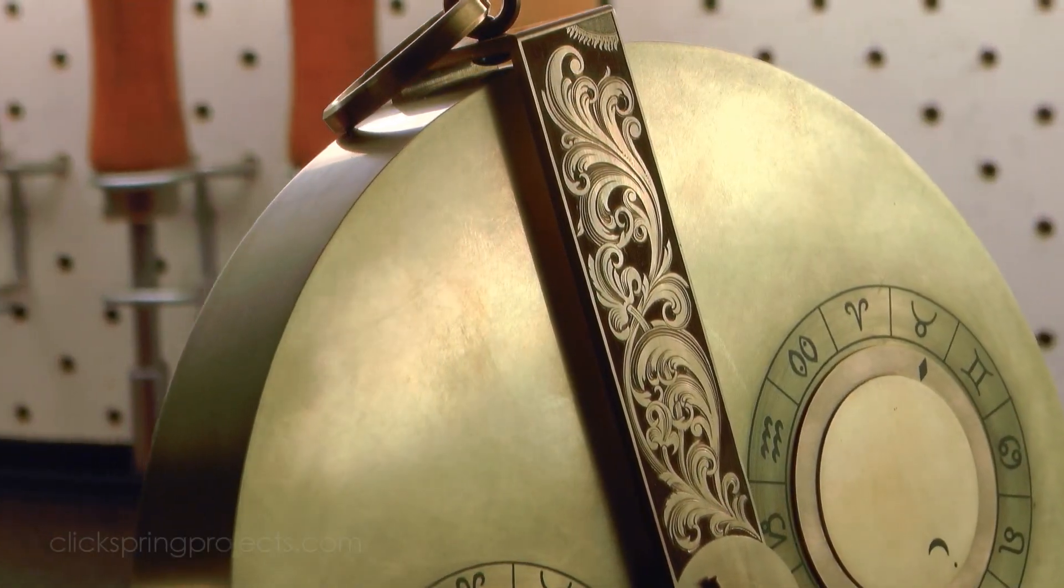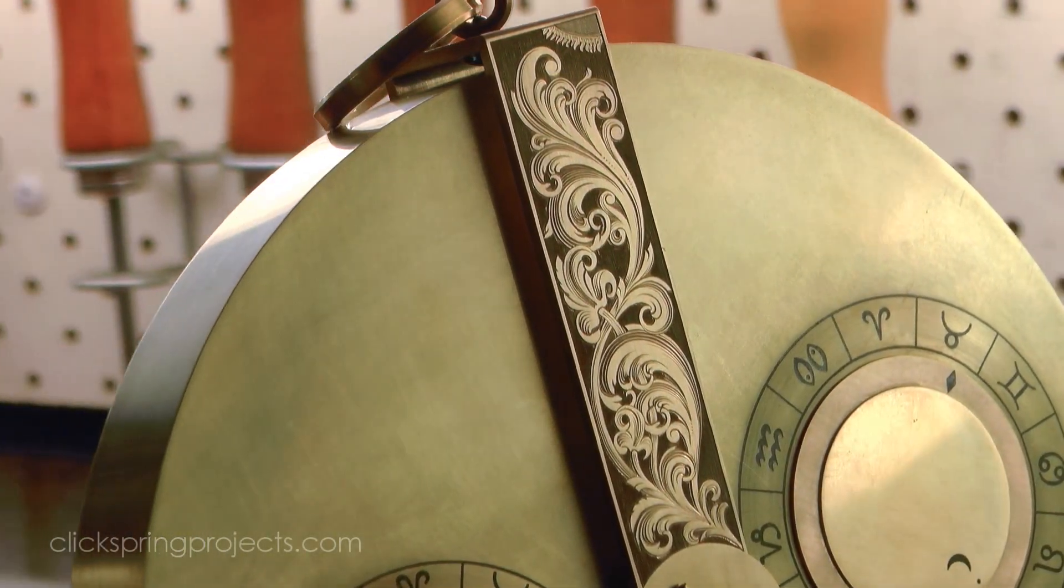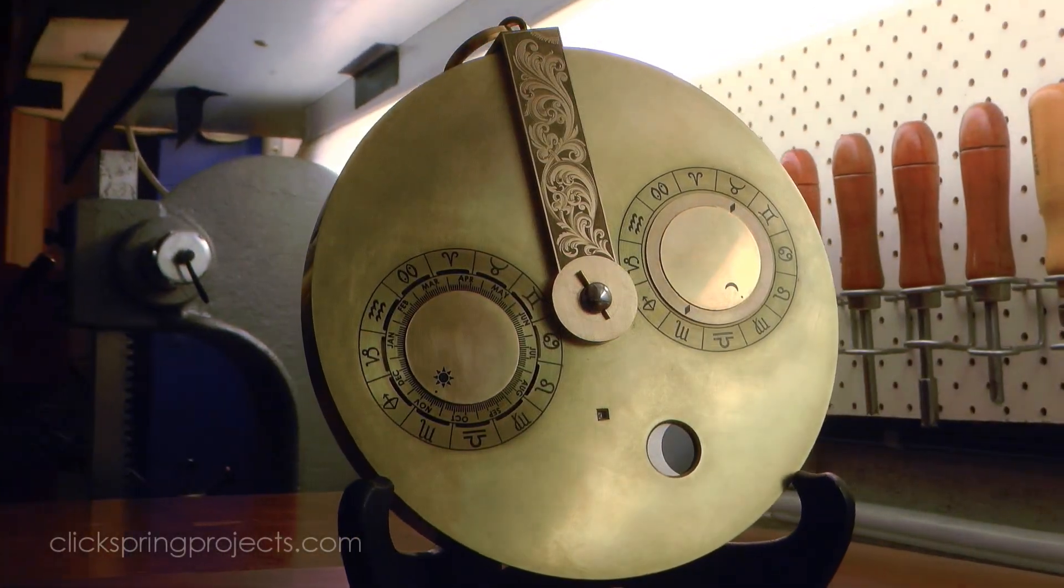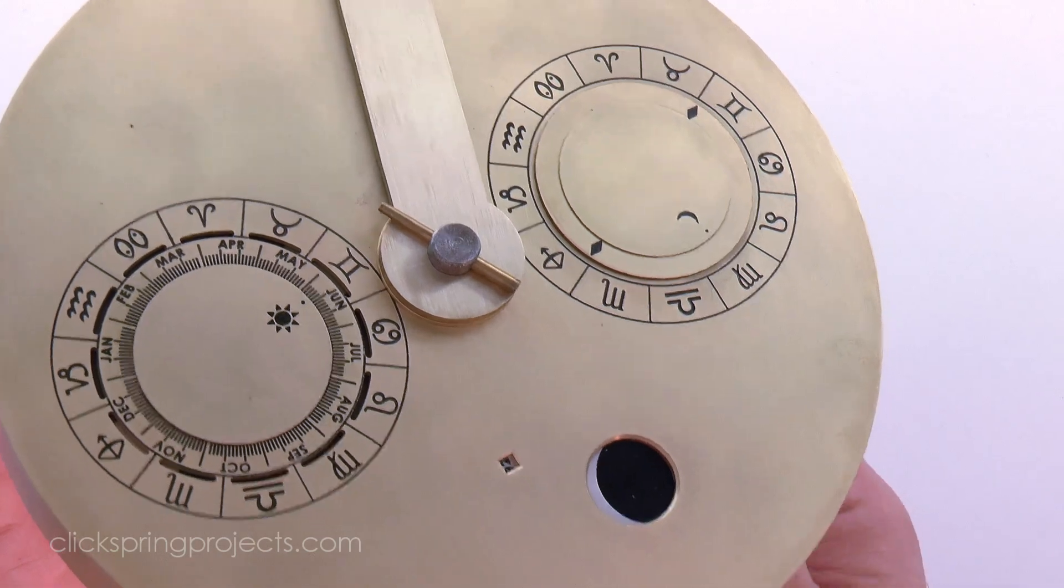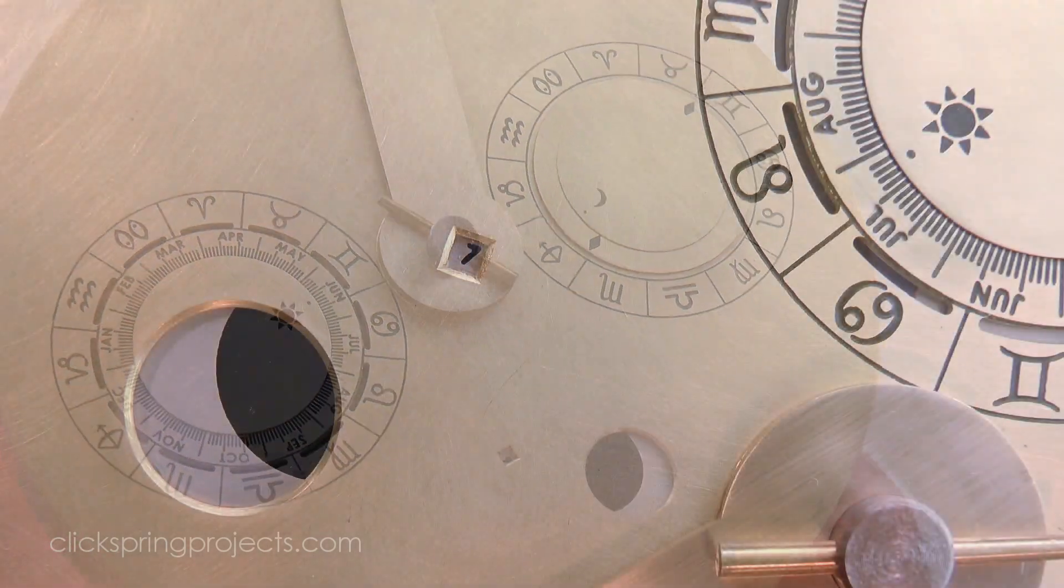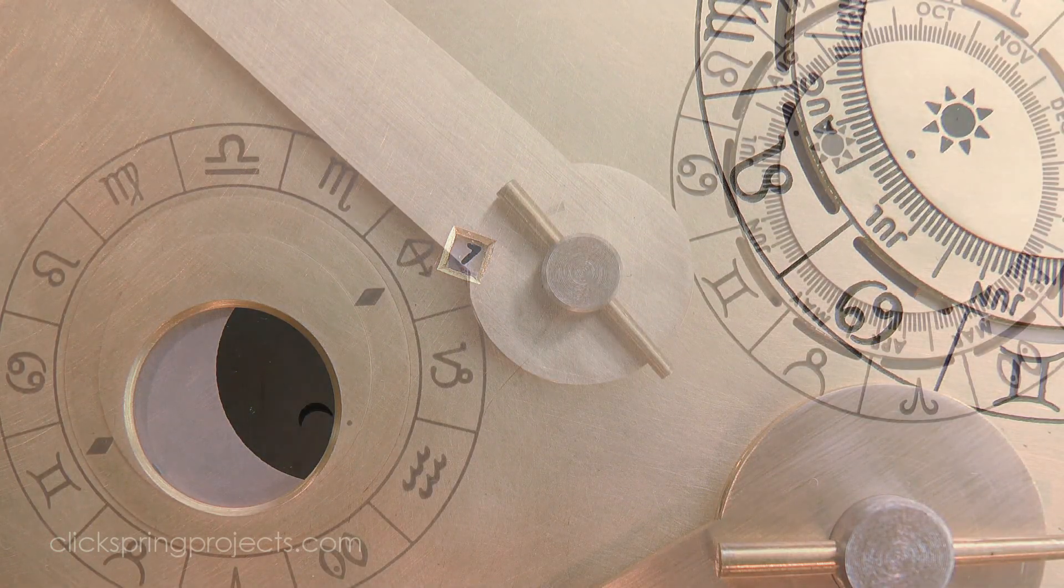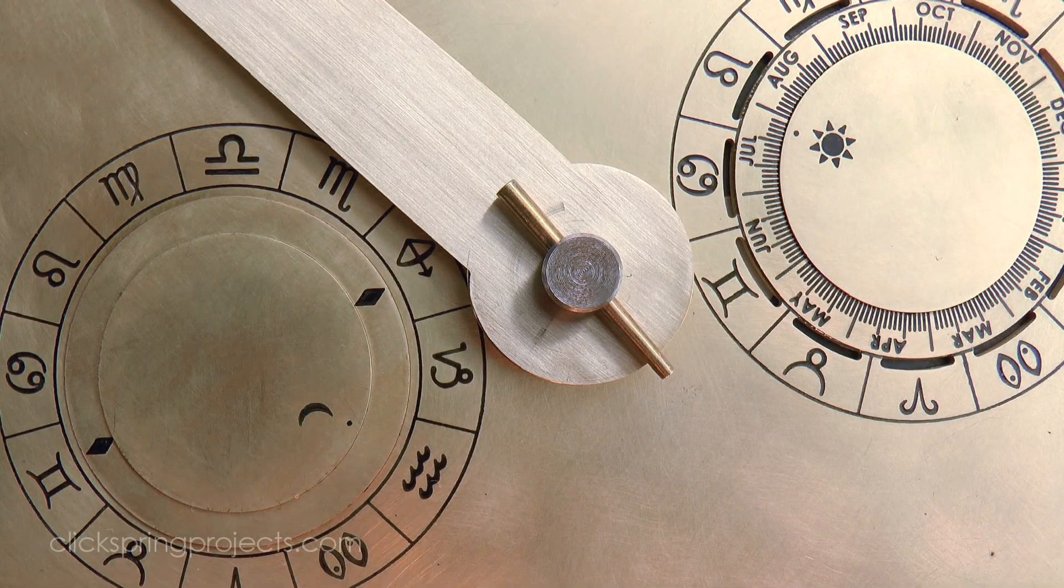An all-in-one portable sundial and calendrical calculator dated to roughly 500 AD. The geared aspect of the device computes the current age and phase of the moon, the position of the sun and moon in the zodiac, as well as the current day of the year.